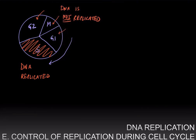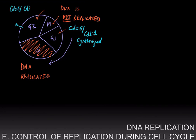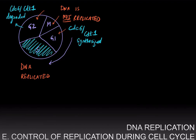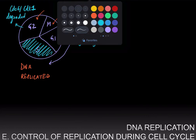One thing that happens is that during gap phase 1, two proteins called CDC6 and CDT1 are synthesized. We are using the example of yeast to illustrate how the synthesis of DNA is controlled during the cell cycle. And during gap 2, CDC6 and CDT1 are degraded or destroyed. This implies that CDC6 and CDT1 are available during the S phase, but are not available during G1, G2, or M.